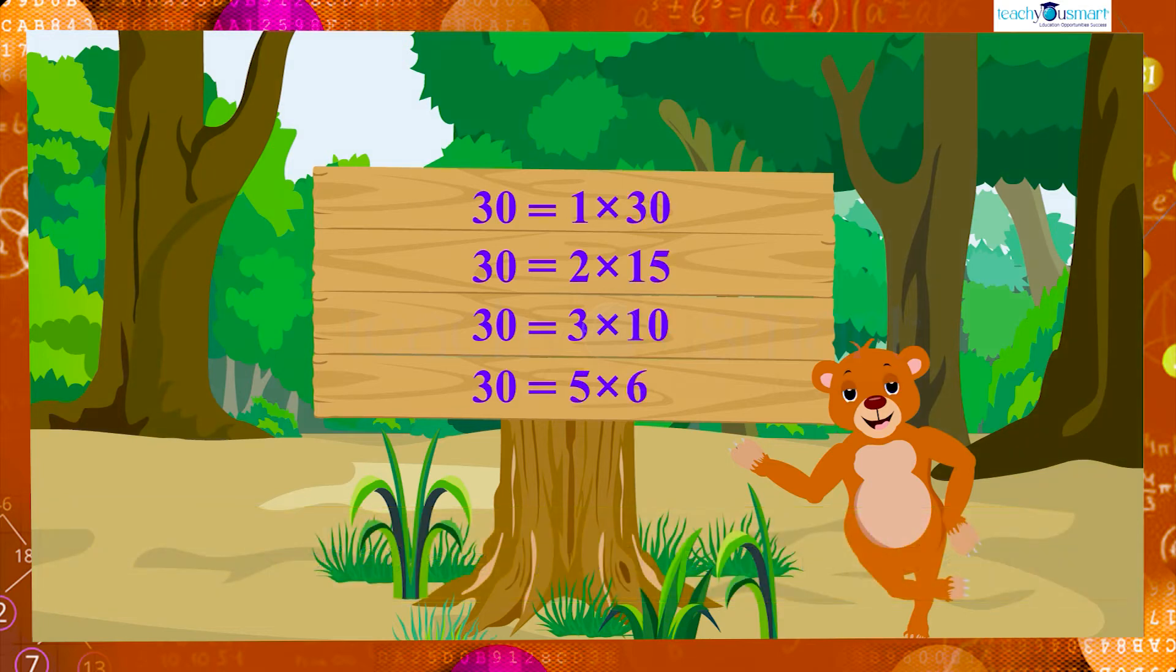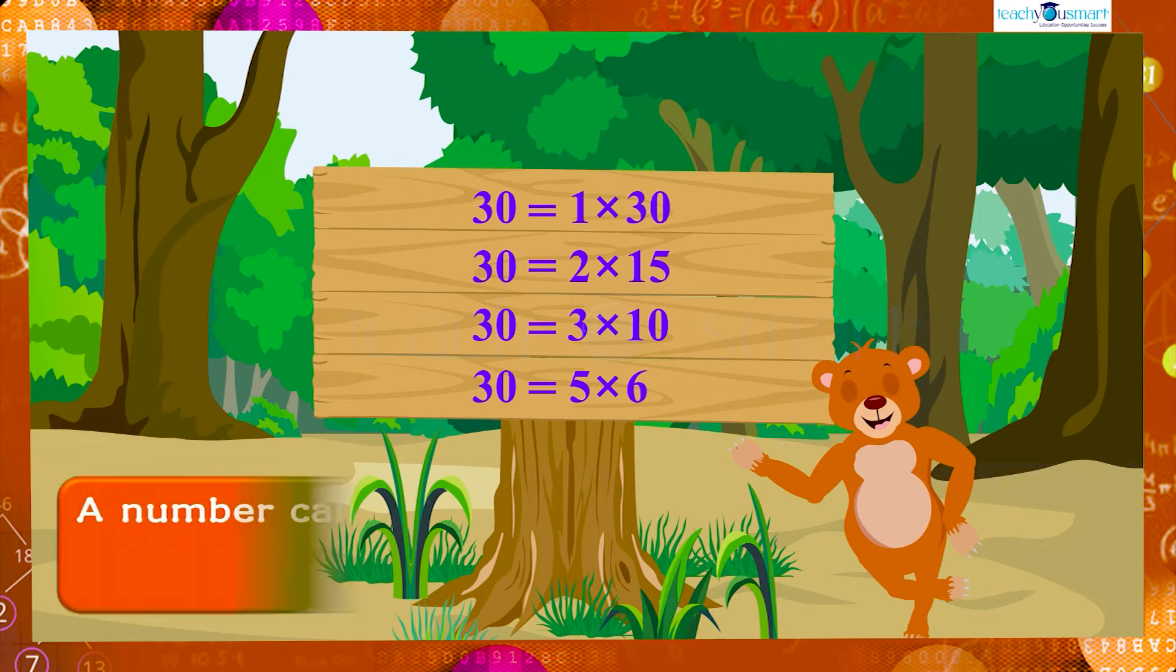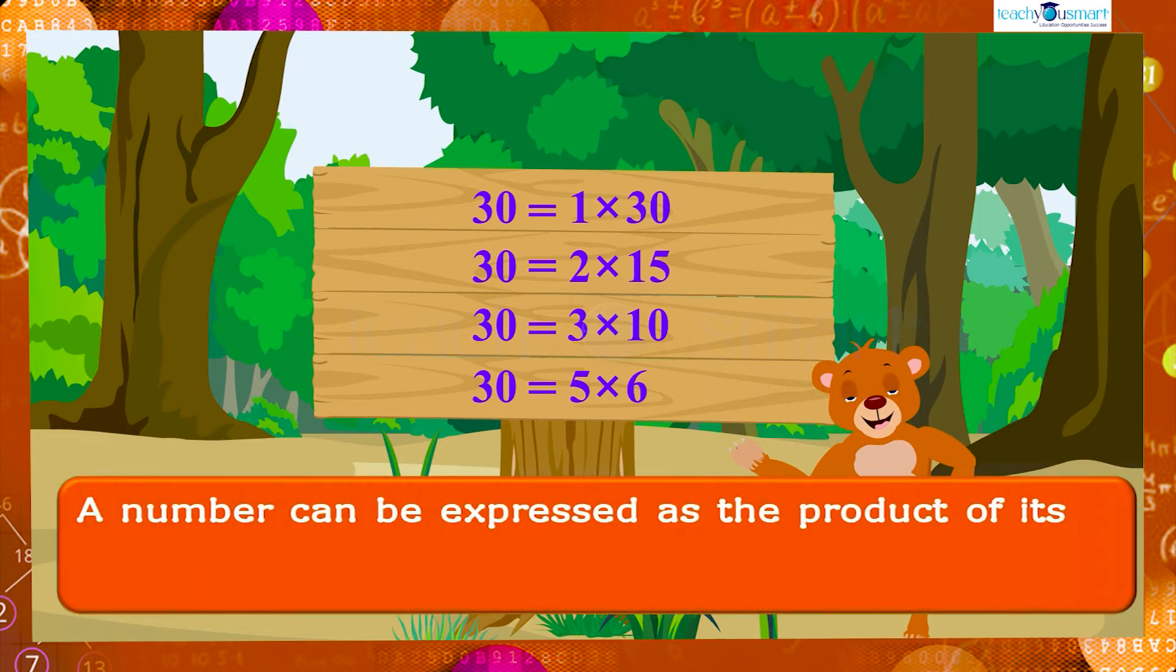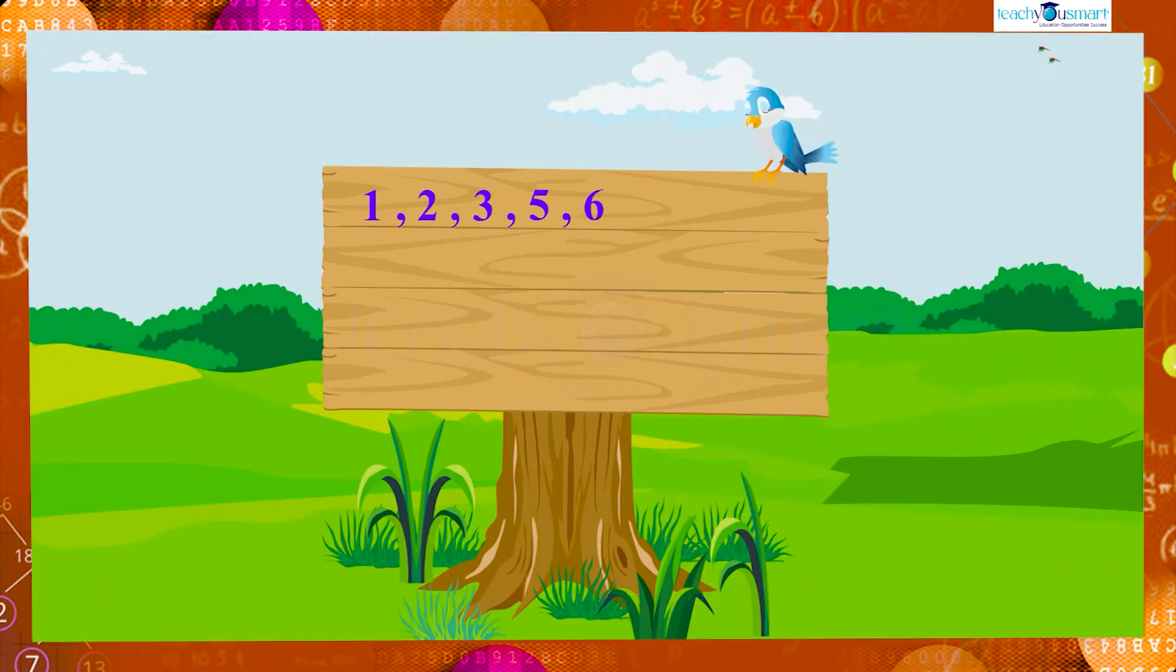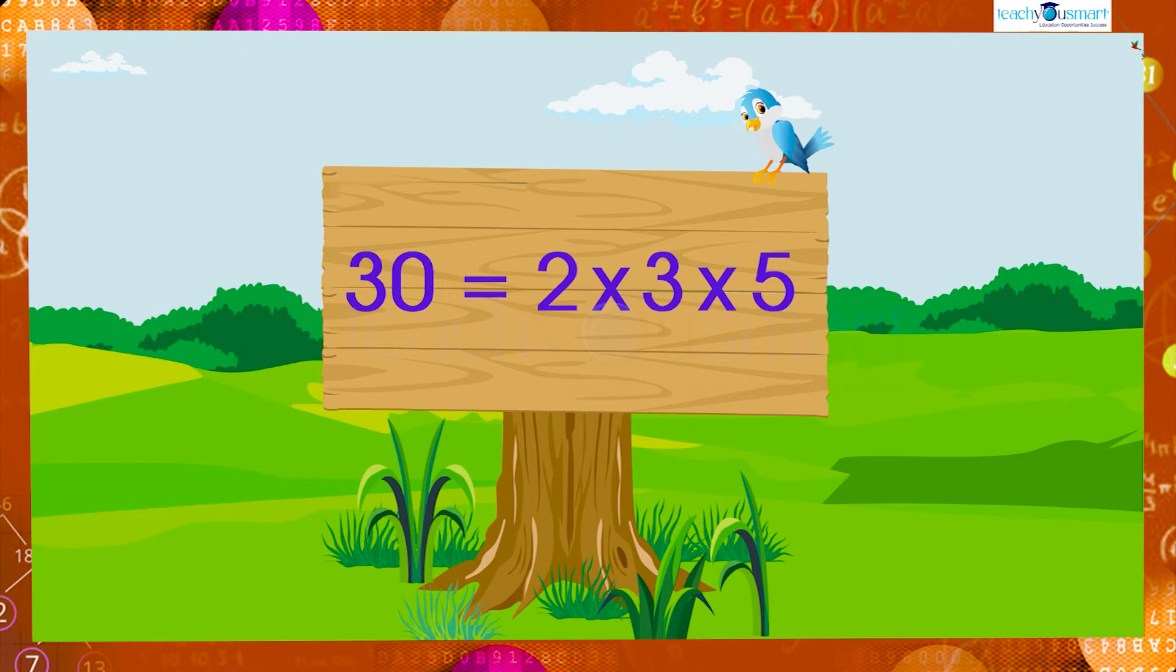In previous grades we learned that a number can be expressed as the product of its prime factors. Among the factors of 30, 2, 3, and 5 are the prime factors. So we can represent the number 30 in prime factorization as 30 is equal to 2 multiplied by 3 multiplied by 5.